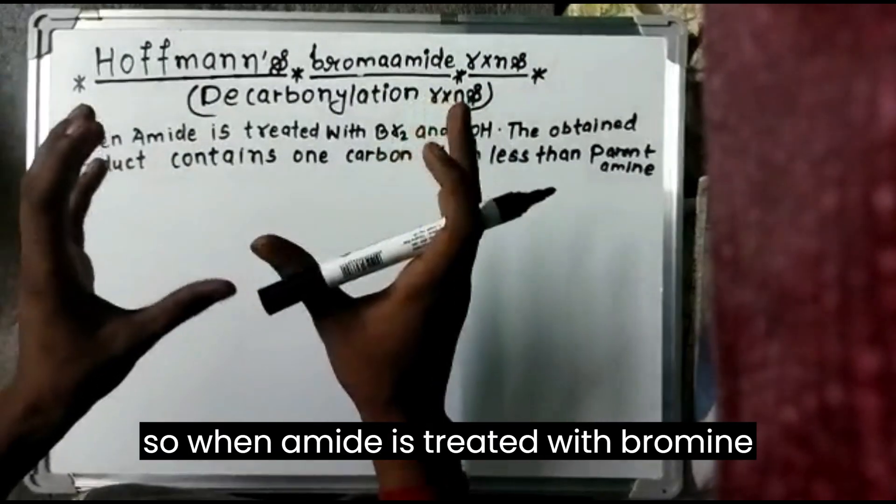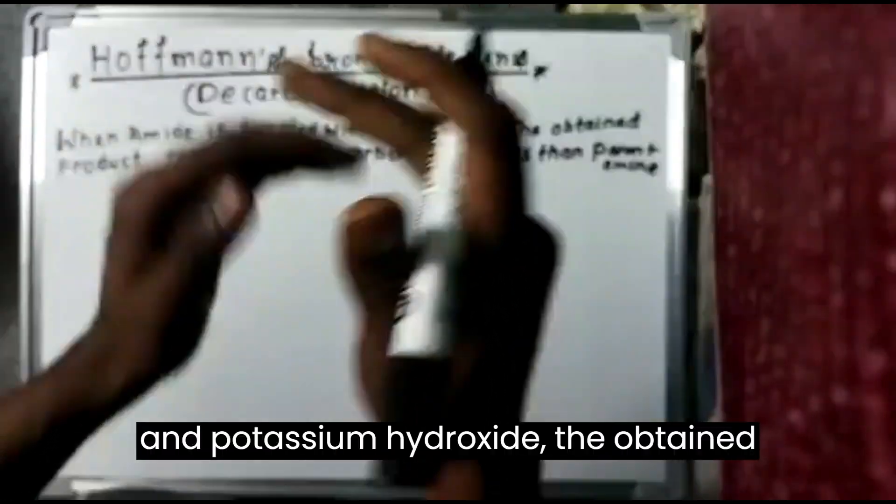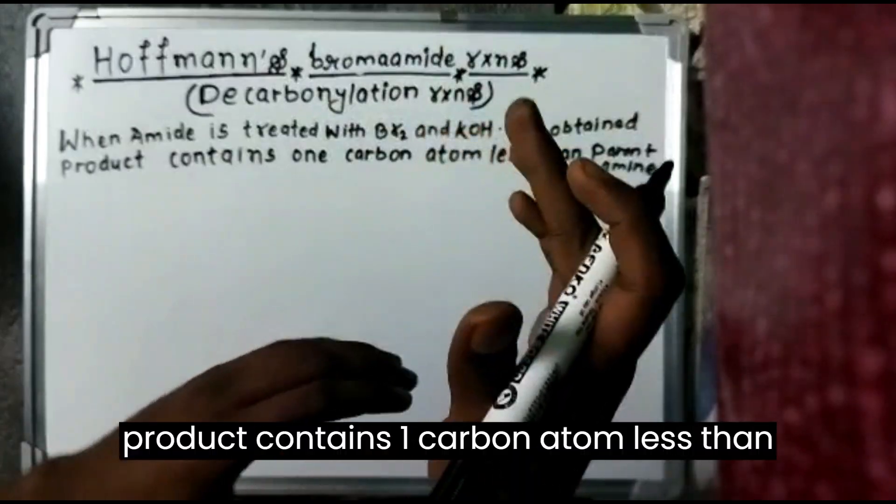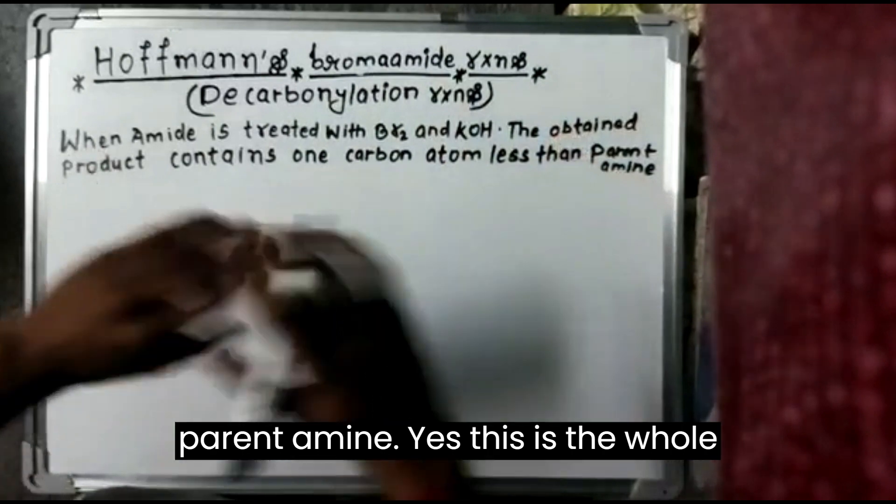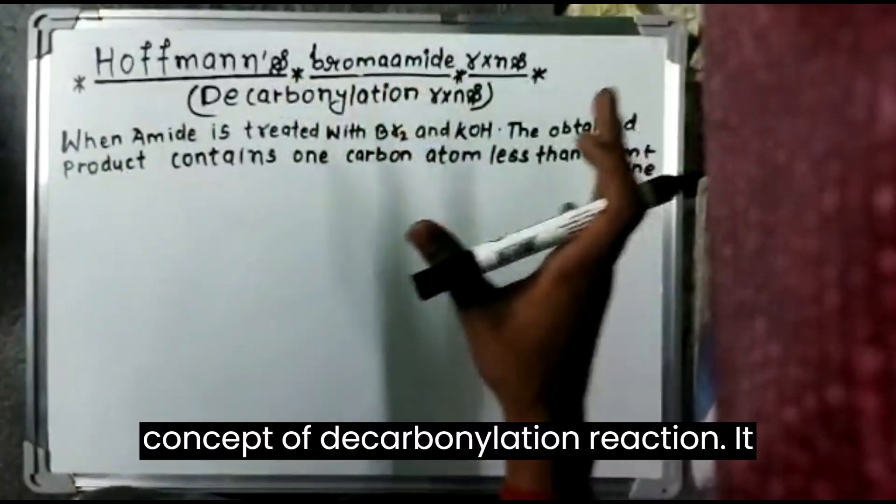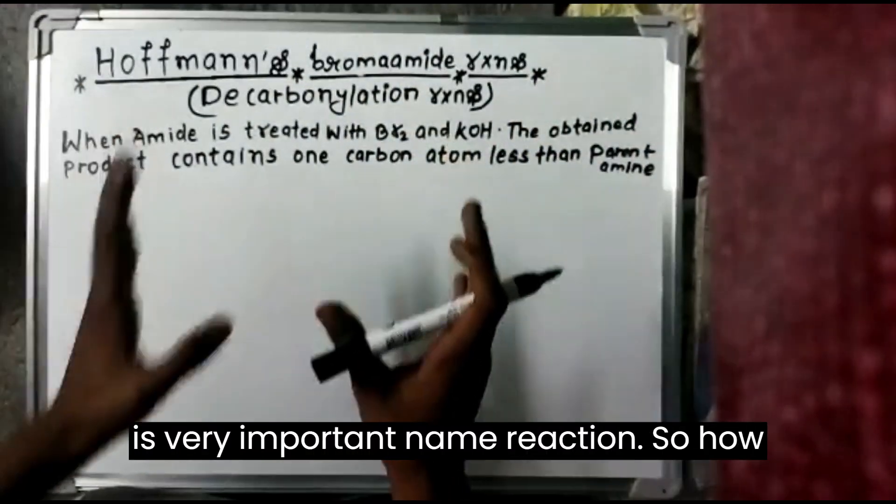So when amide is treated with bromine and potassium hydroxide, the obtained product contains one carbon atom less than parent amine. Yes, this is the whole concept of decarbonylation reaction. It is a very important name reaction.